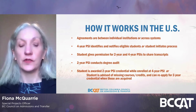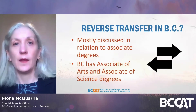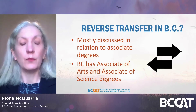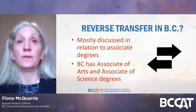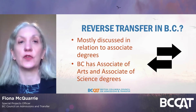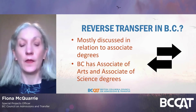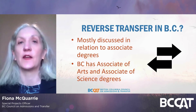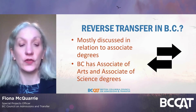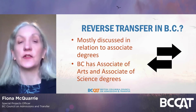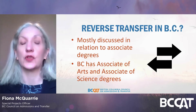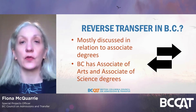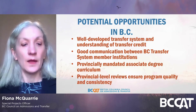Now we're going to look at the idea of reverse transfer in relation to BC's own transfer system. When reverse transfer is discussed in BC, it's mostly discussed in relation to associate degrees. BC is the only province in Canada that awards associate degrees. In the BC post-secondary system there are two types: the Associate of Arts and the Associate of Science. There are 23 BC post-secondary institutions that offer associate degrees, including six private and 17 public institutions.